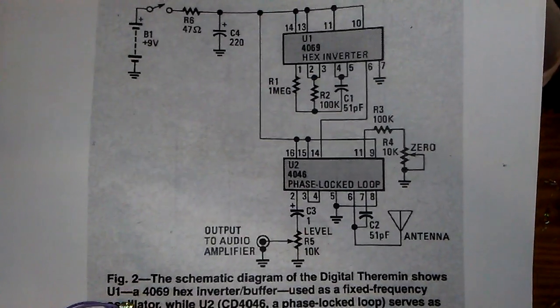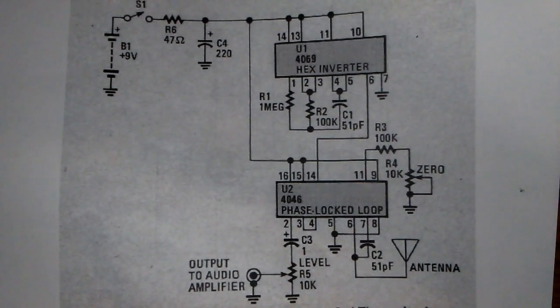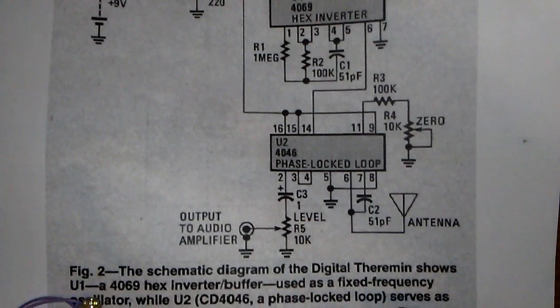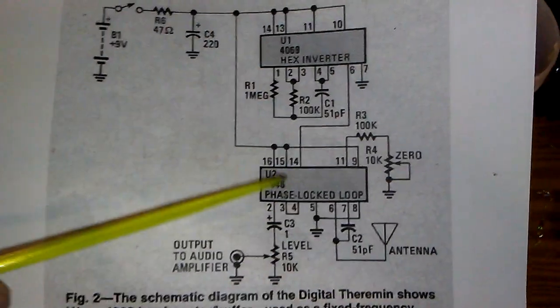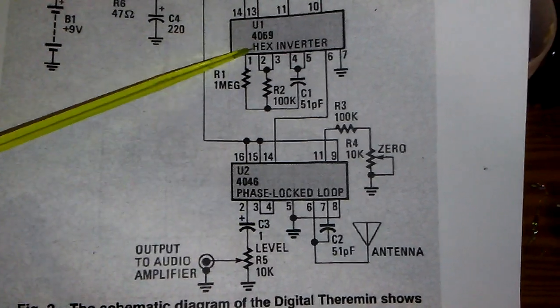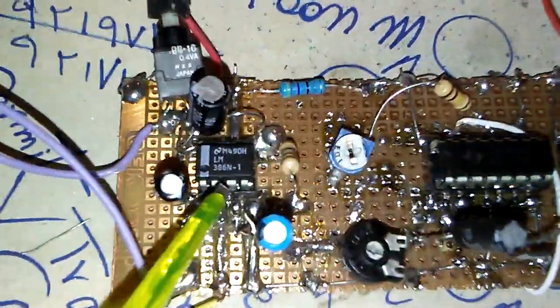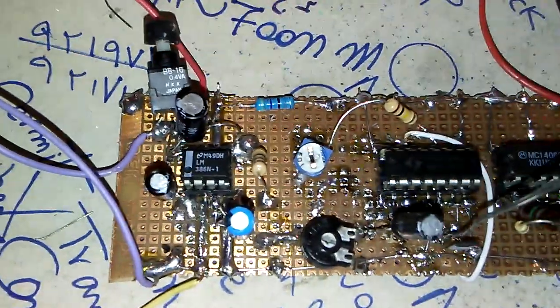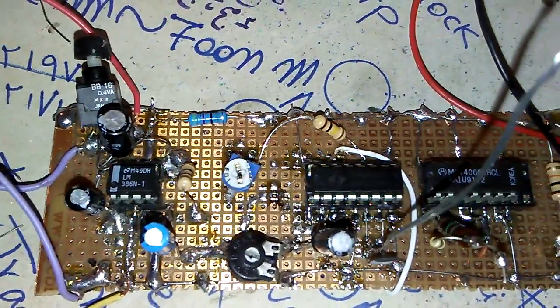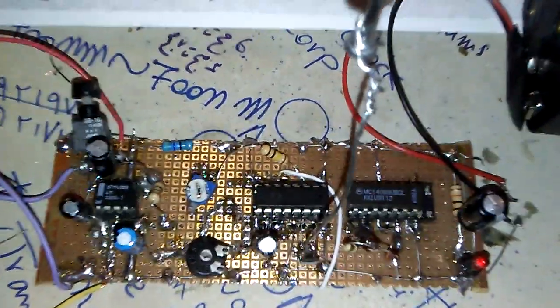I have one more theremin project in my videos, but this one is very simple with two CMOS ICs and one amplifier. I used LM386, as you can see it is working really pretty well.